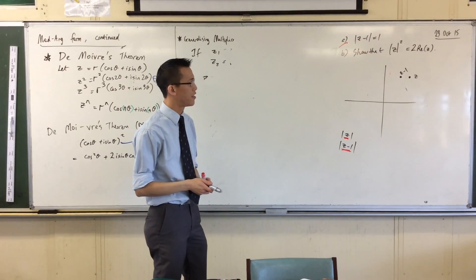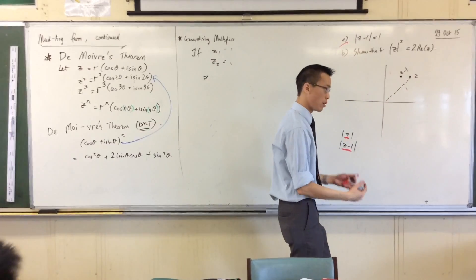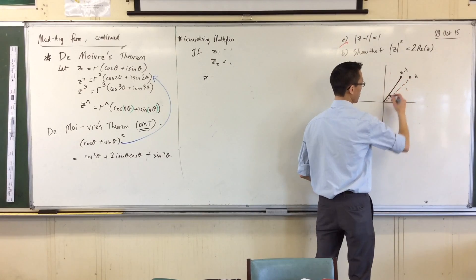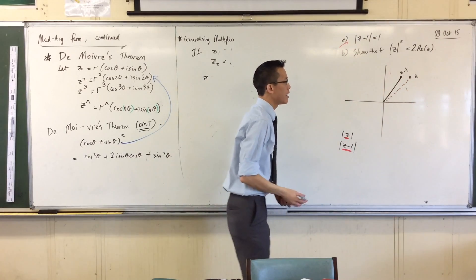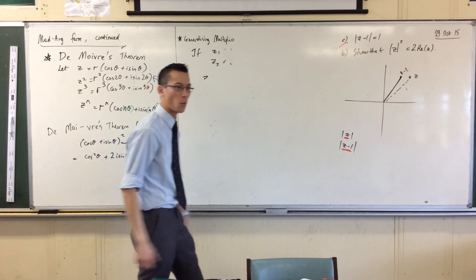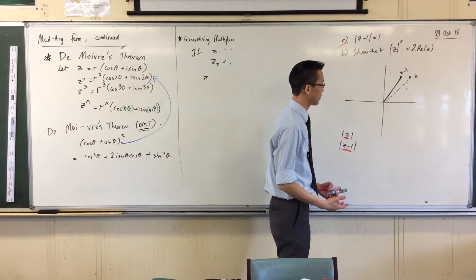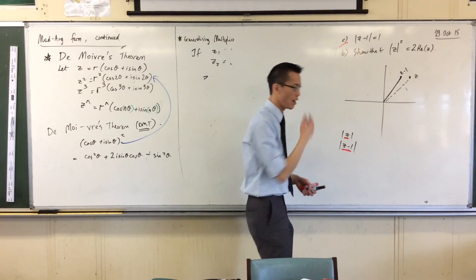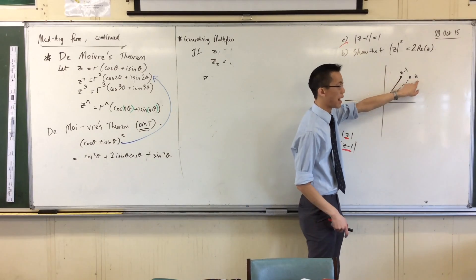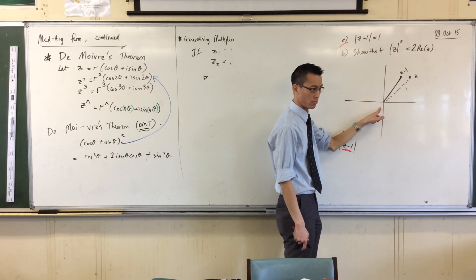So there's z minus one. The modulus of z is this line here, this length, and the modulus of z minus one is this length, and I want it to be one. This is one way of thinking about it, but it tends to be not actually that useful. I'm kind of stuck, so where's my next step? I can think of moving my complex number one to the left and measuring from the origin.